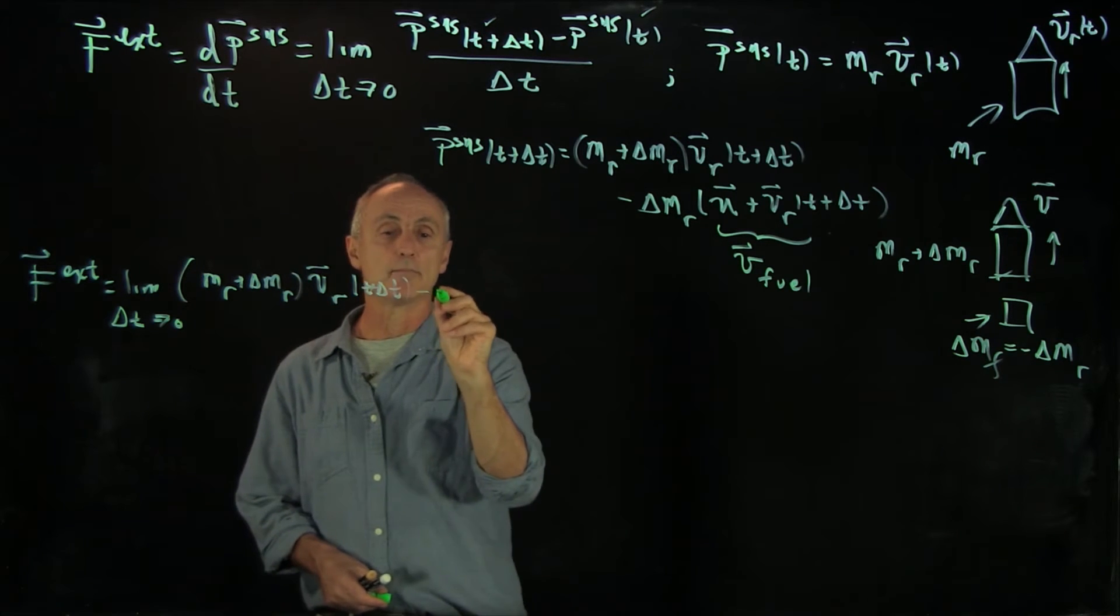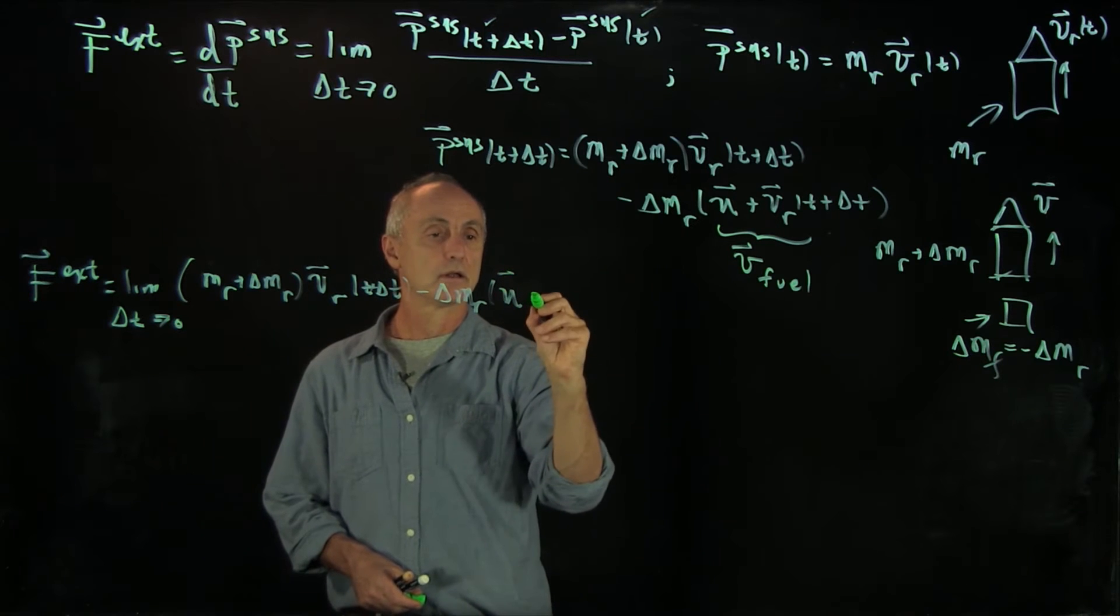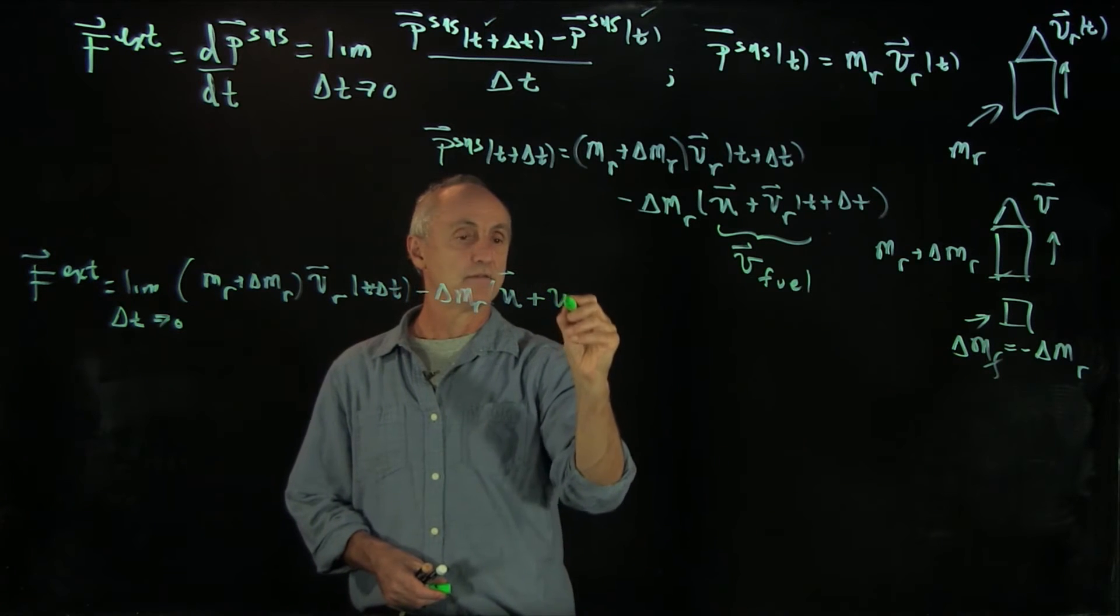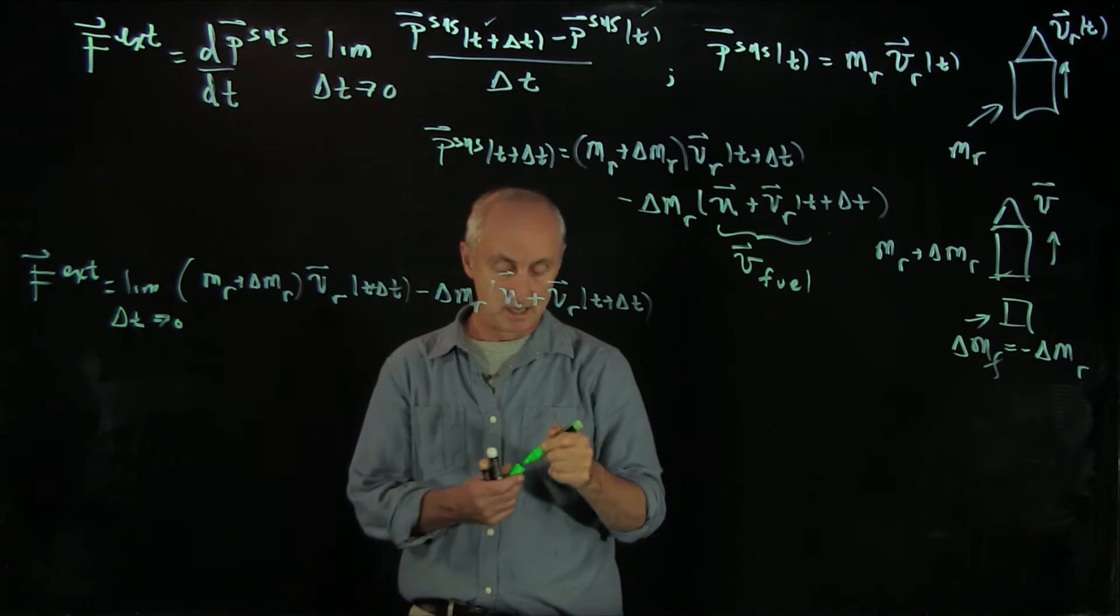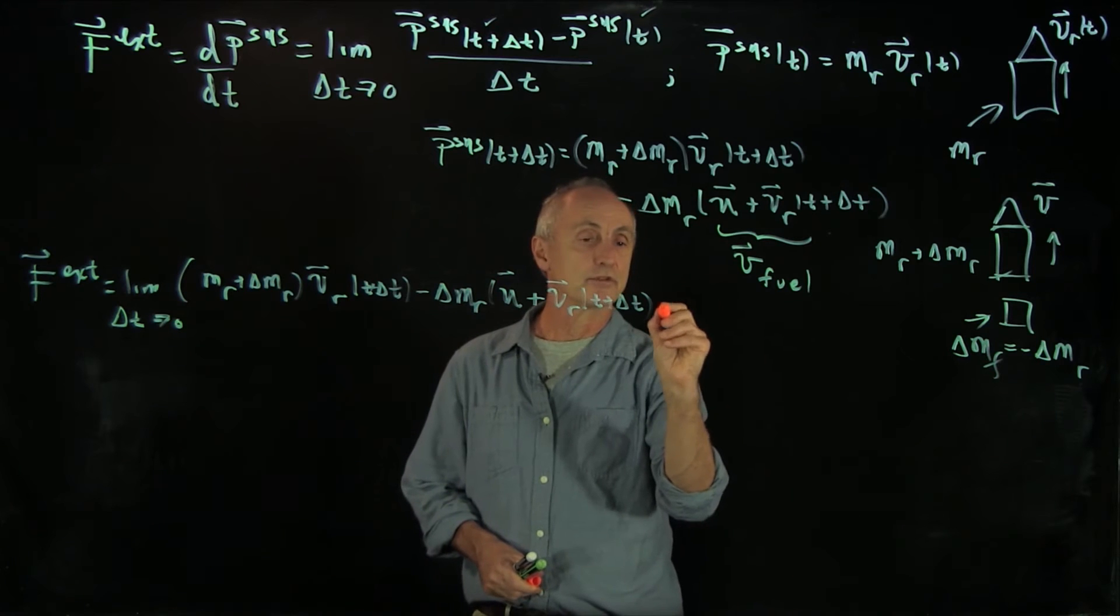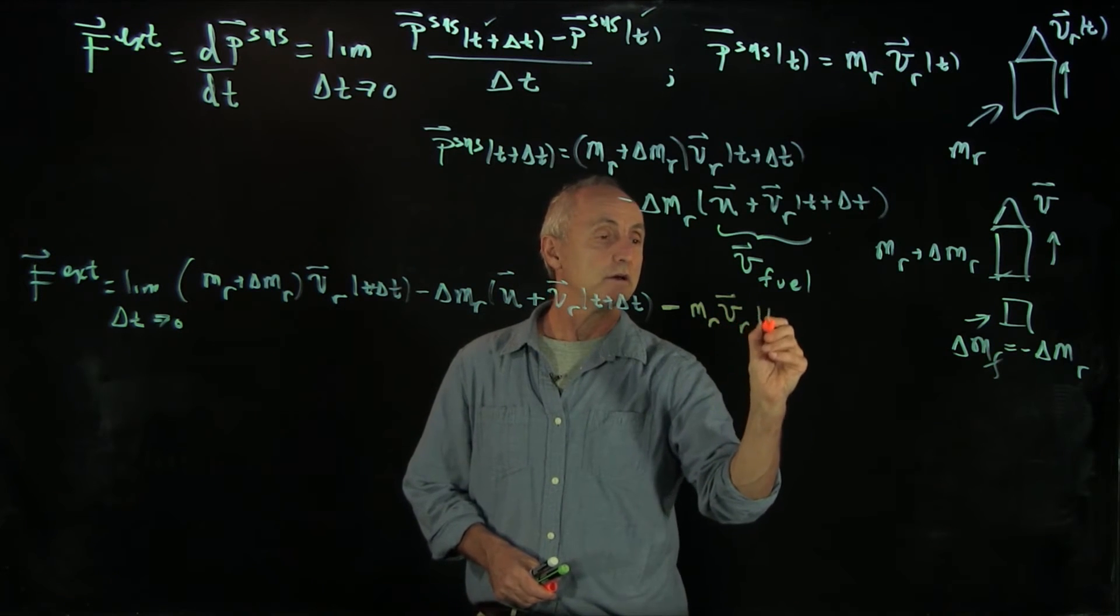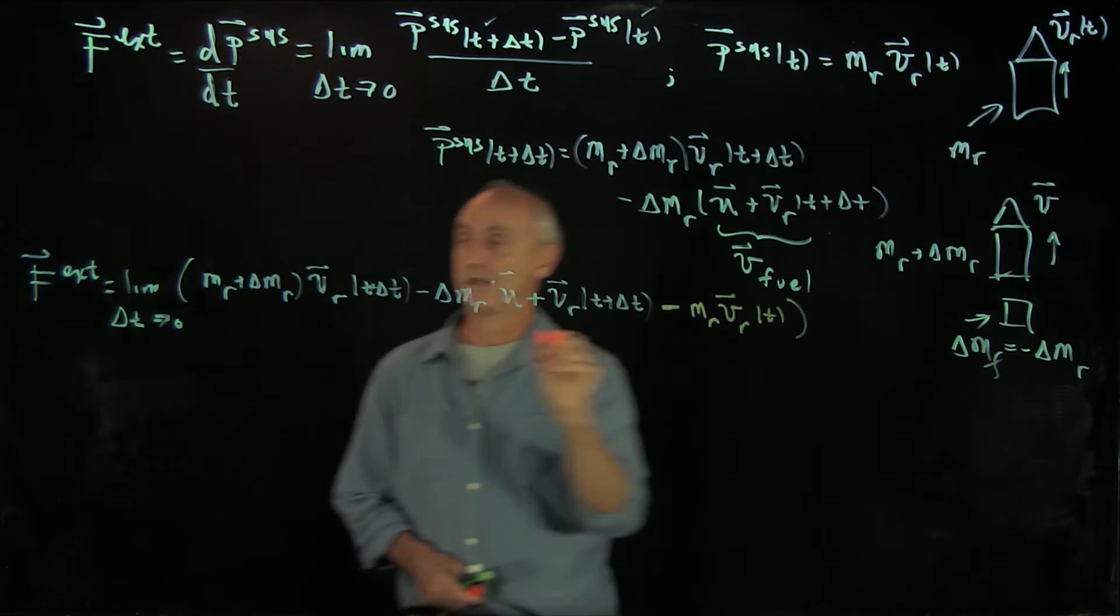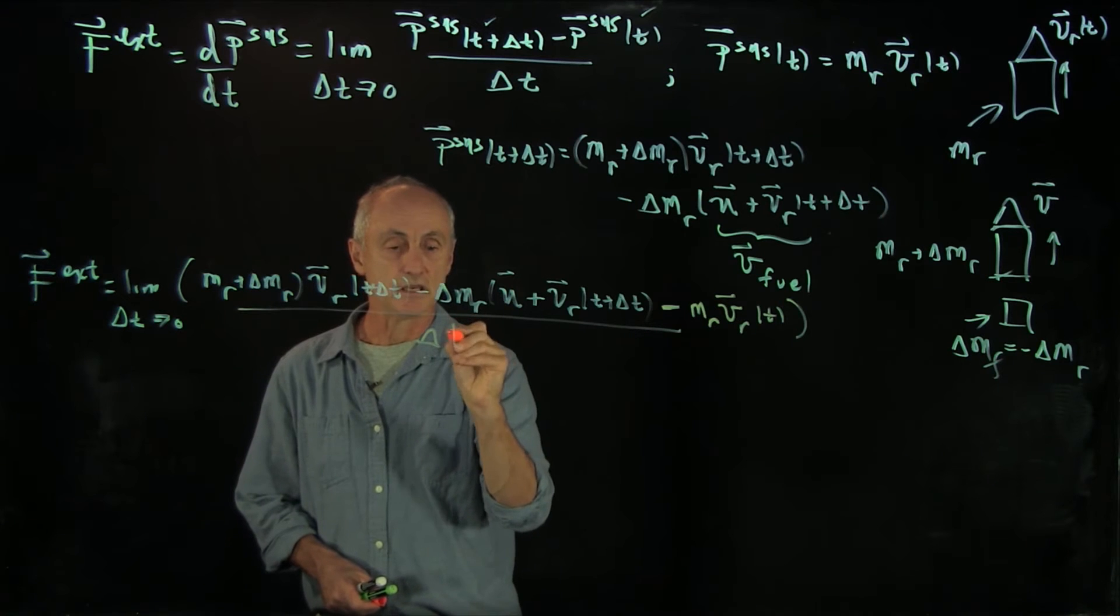And now we have the fuel term minus delta mr times u plus v of r of t plus delta t. And we have to subtract from that. And I'll indicate that with a slightly different color, mr v of r of t. And the whole thing we're dividing by delta t.